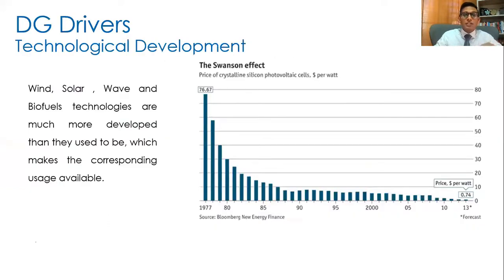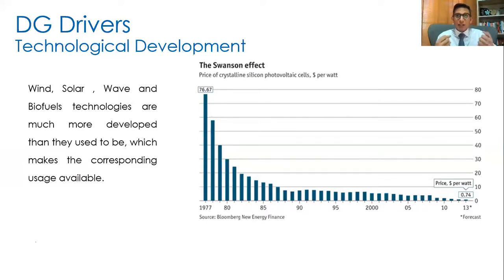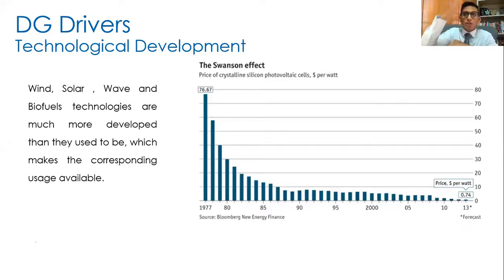Let's focus on technological development as a key driver. Wind, solar, wave and biofuel technologies are much more developed than they used to be. In the past, people thought they could harness power from wind or PV, but the technology is only now available affordably and reasonably. The graph on the right side is what we call the Swanson effect - just like Moore's Law in IT. The cost of producing a crystalline silicon PV cell was around 76 USD per watt in 1977. Right now it's around 0.74 USD, and in 2021 it should be even lower.